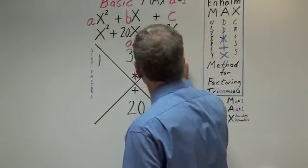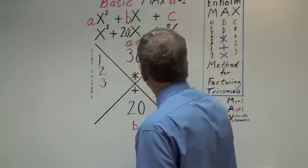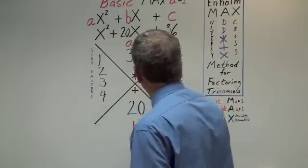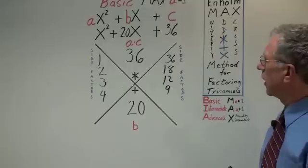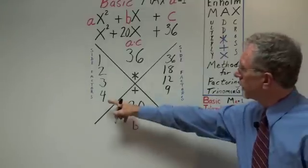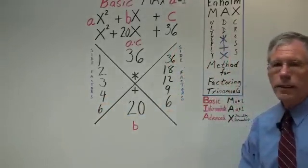Then you do the side factors for 36, 1, 36, 2, 18, 3, 12, 4, 9. At this point, what you realize is that we're done. The next factor would be 6 and 6 and we're complete.